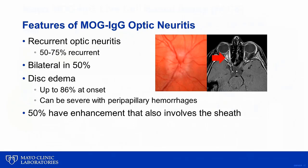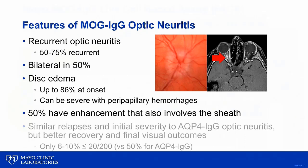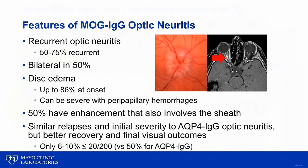MRI of the optic nerve often shows long segments of optic nerve enhancement. In addition, up to 50% of cases can show optic nerve sheath enhancement with extension to the peribulbar fat, which is also a fairly specific sign of MOG-related optic neuritis. Vision loss is usually severe at nadir, but fortunately the recovery is typically better than seen with aquaporin-4 optic neuritis. Only 6% to 10% of patients with MOG optic neuritis have a final visual outcome worse than 20/200, compared to 50% of patients with aquaporin-4 optic neuritis.